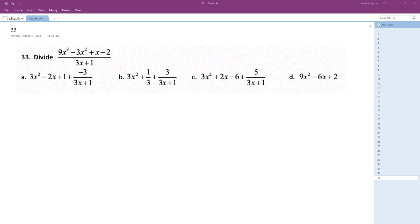All right, so we want to take 9x cubed minus 3x squared plus x minus 2 divided by the whole quantity 3x plus 1.